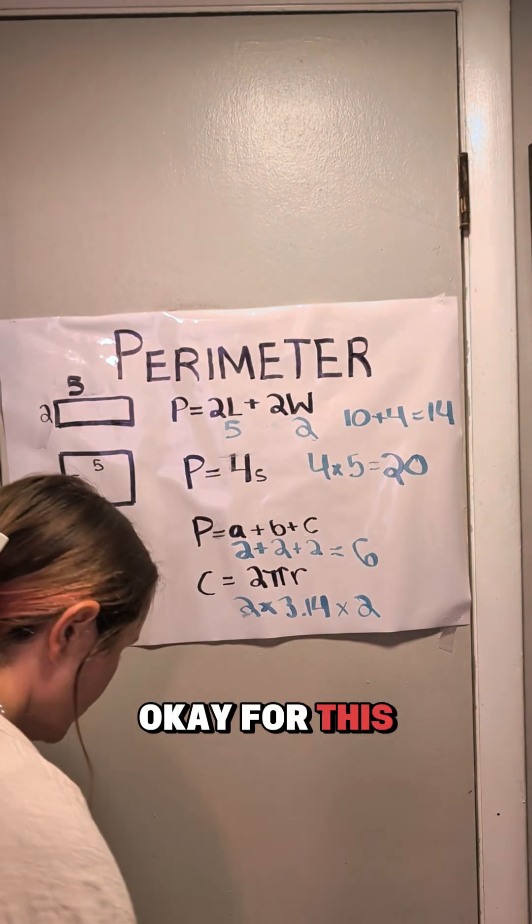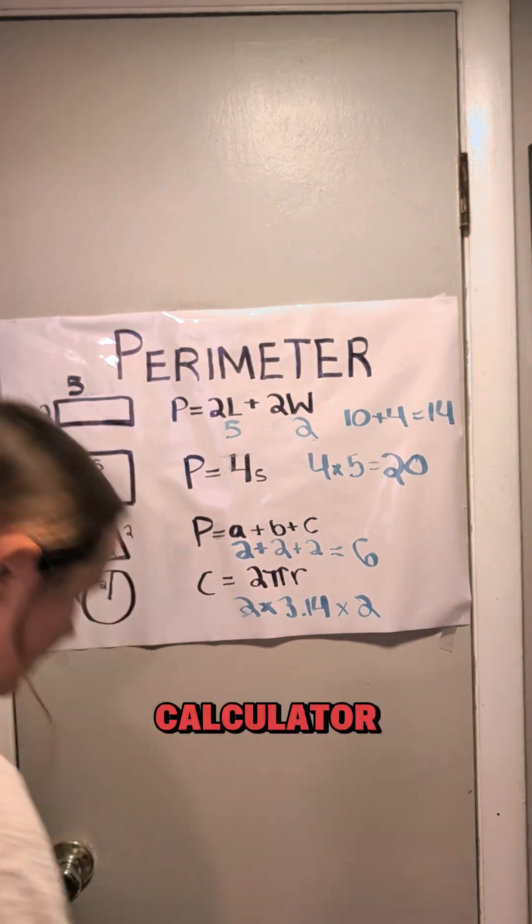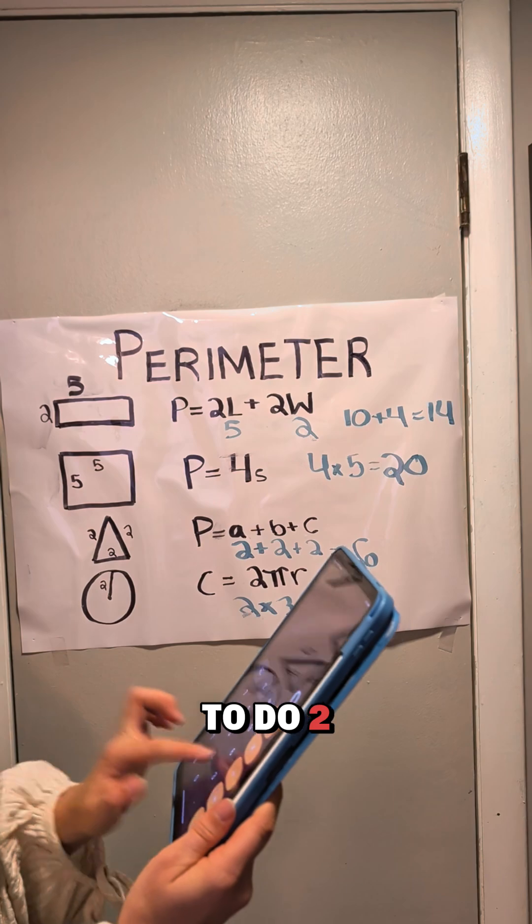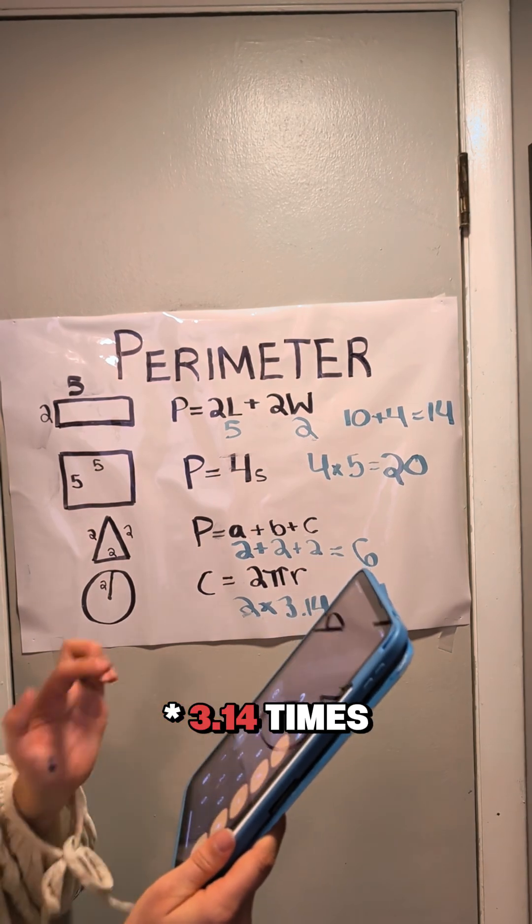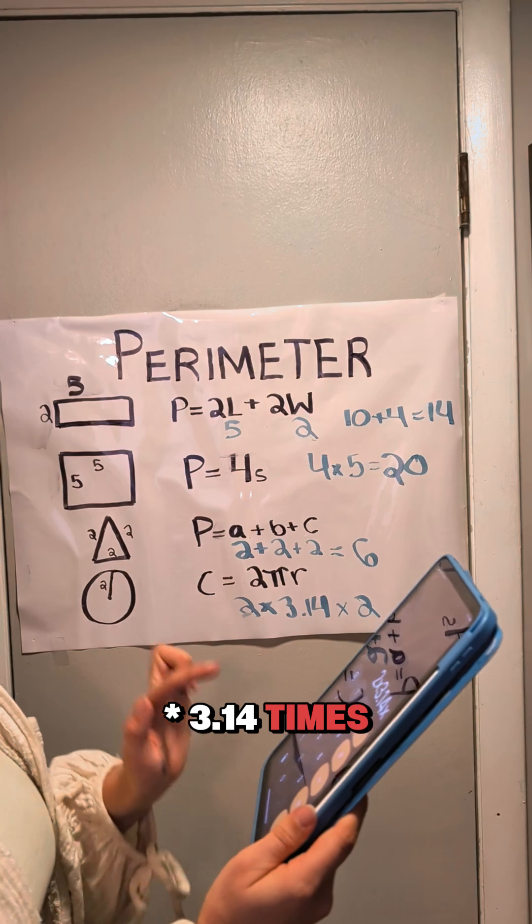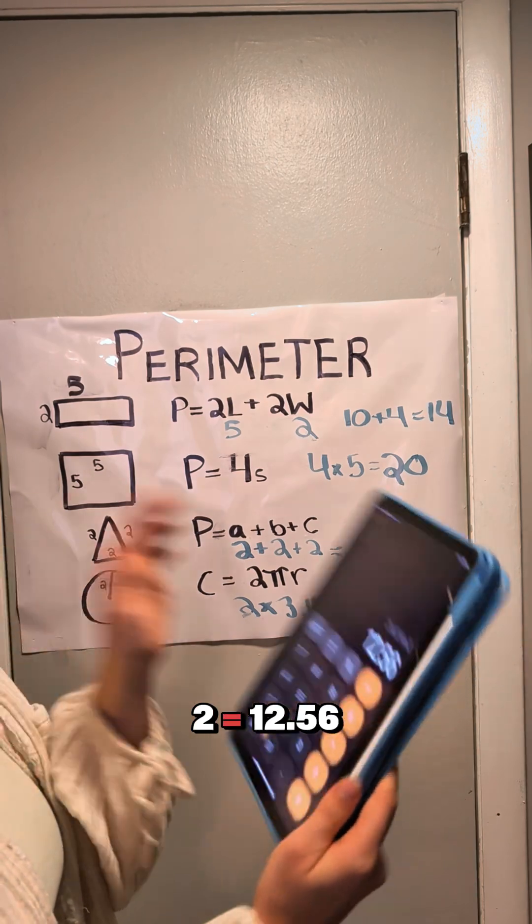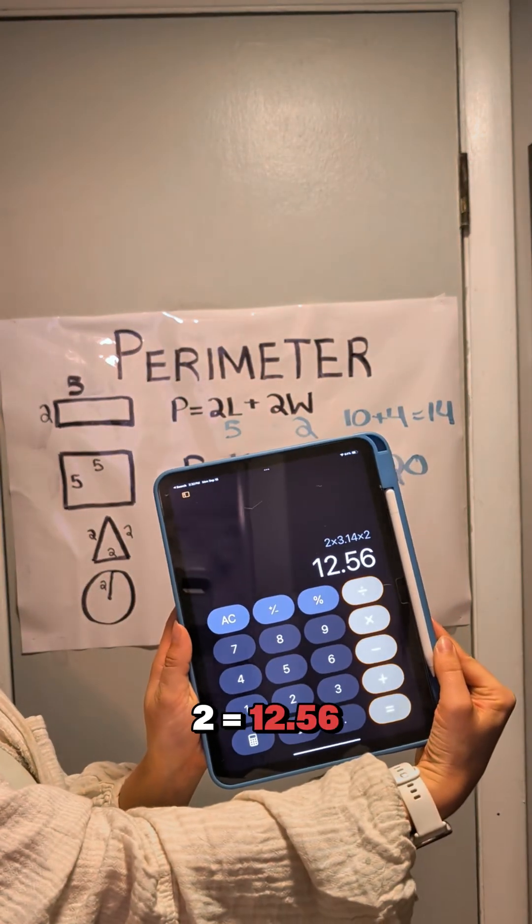Okay, for this, I am going to pull out my calculator. We are going to do 2 times 3.14 times 2 equals 12.56. Perfect.